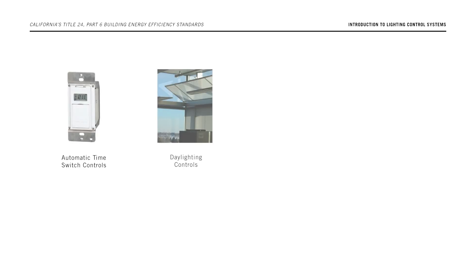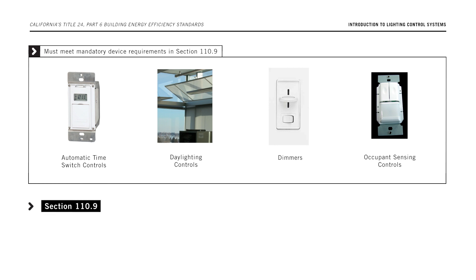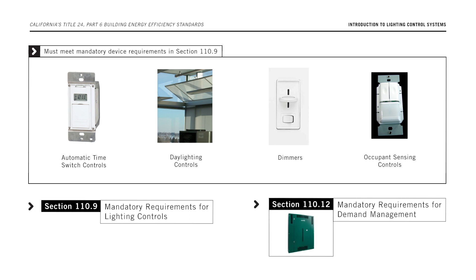Automatic time switch controls, daylighting controls, dimmers, and occupant sensing controls must meet mandatory device requirements in section 110.9 of the Energy Code. Demand response controls must meet the requirements in section 110.12 of the Energy Code.